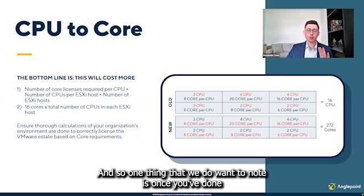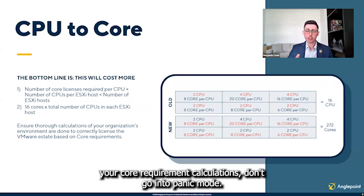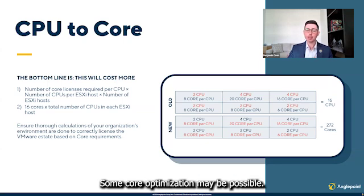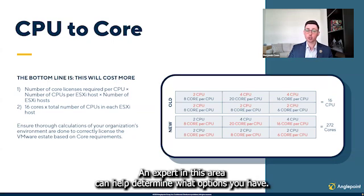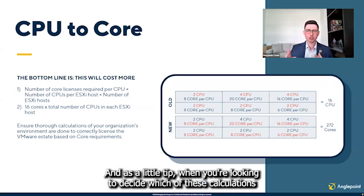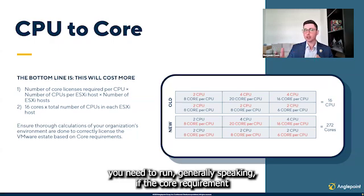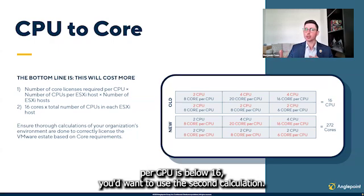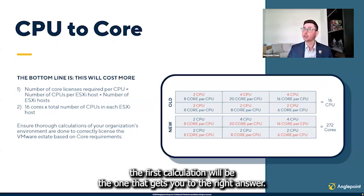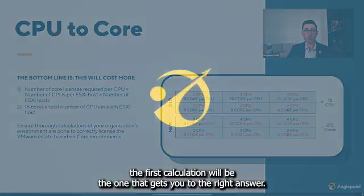One thing that we do want to note is once you've done your core requirement calculations, don't go into panic mode. Some core optimization may be possible. An expert in this area can help determine what options you have. And as a little tip, when you're looking to decide which of these calculations you need to run, generally speaking, if the core requirement per CPU is below 16, you'd want to use the second calculation. And if it's 16 or greater, the first calculation will be the one that gets you to the right answer.